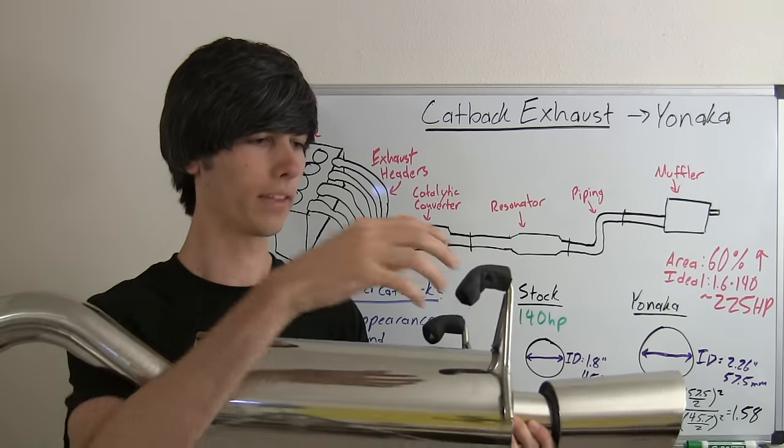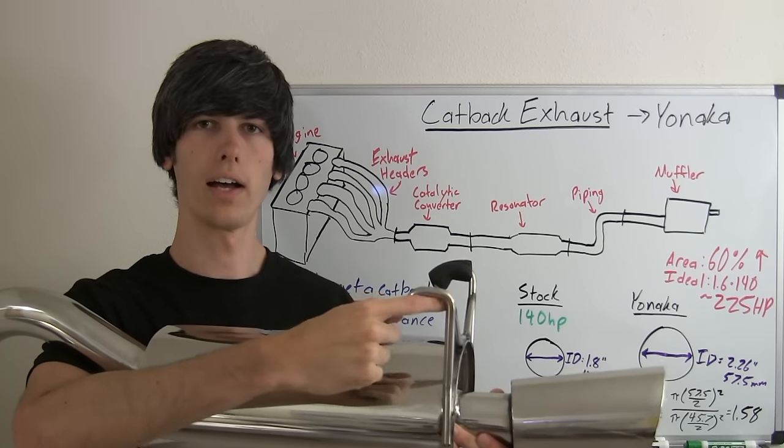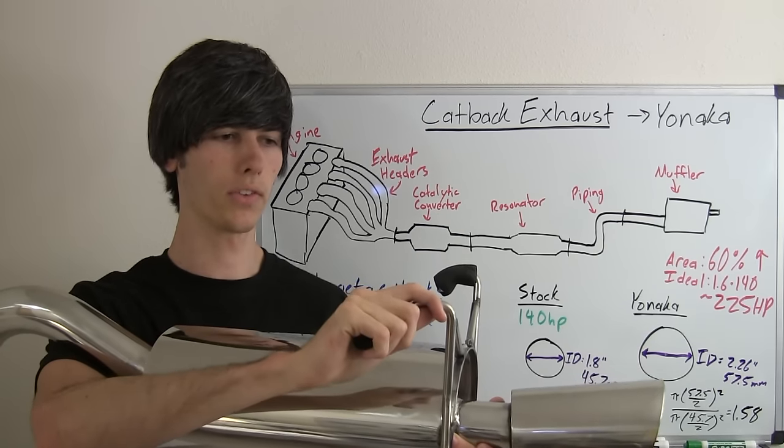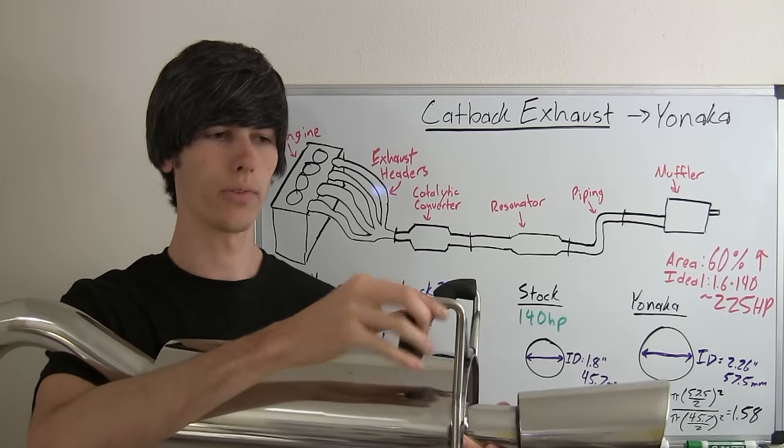So these little black things you see here, these are just the metal hangers. You're going to have hangers in your car already where the exhaust is hanging on with little rubber mounts, and you're just going to slip these right into that. So that's what those are for.